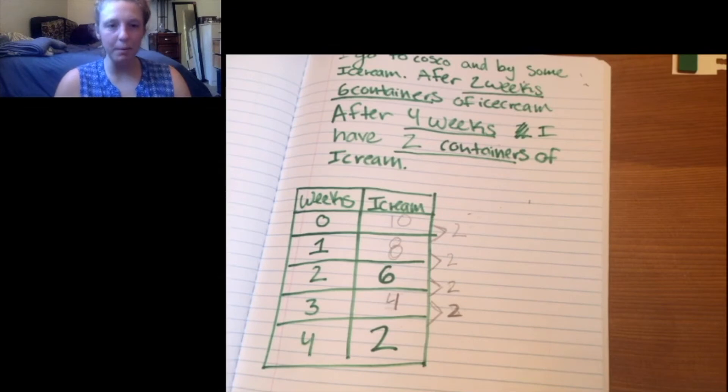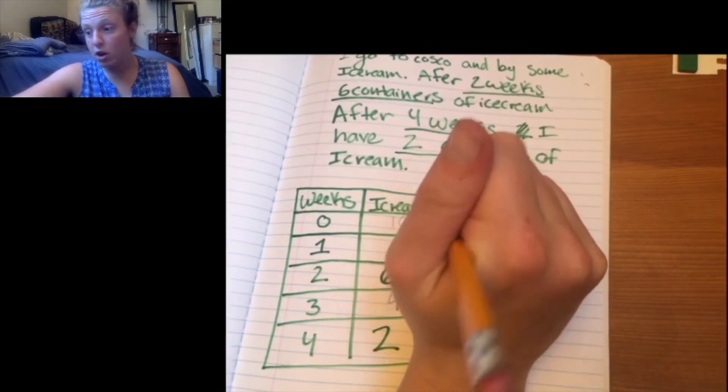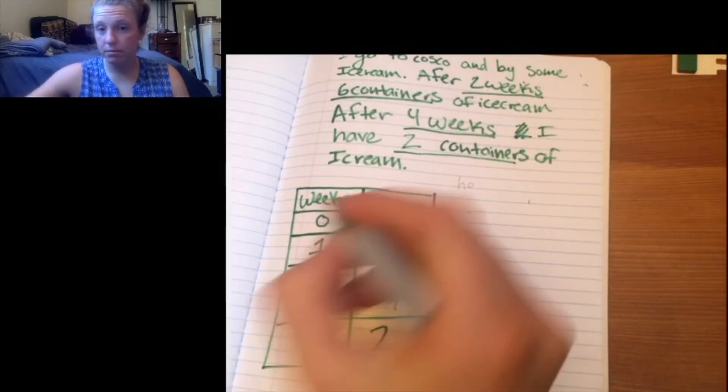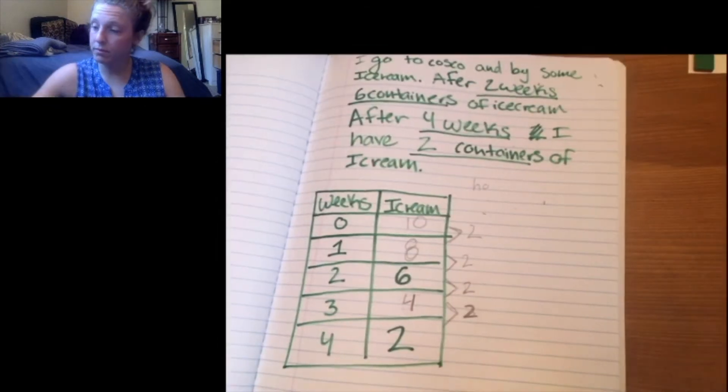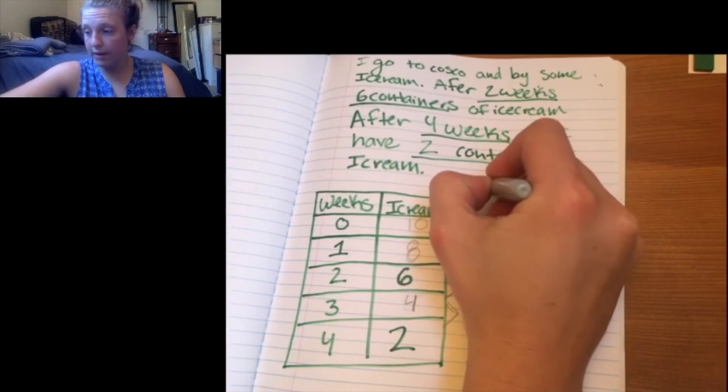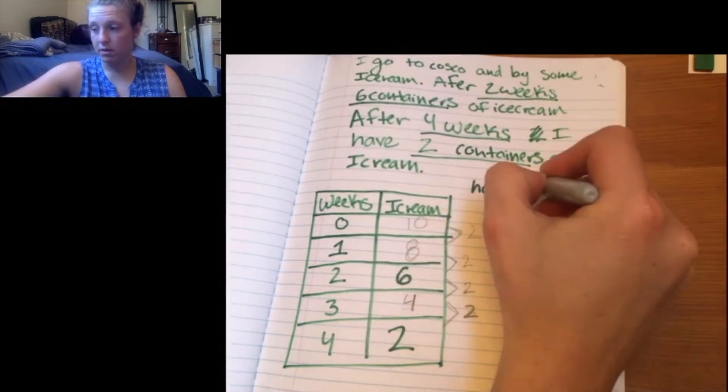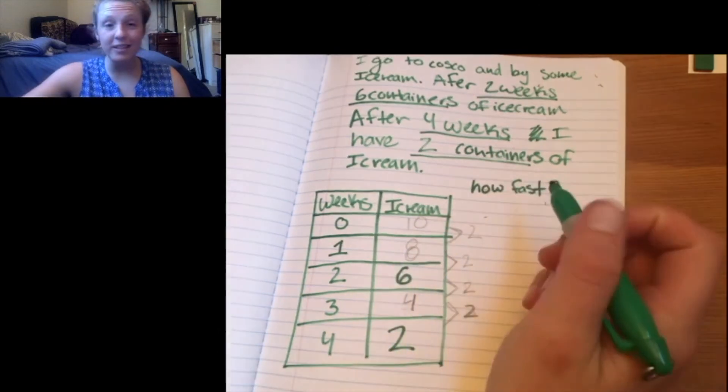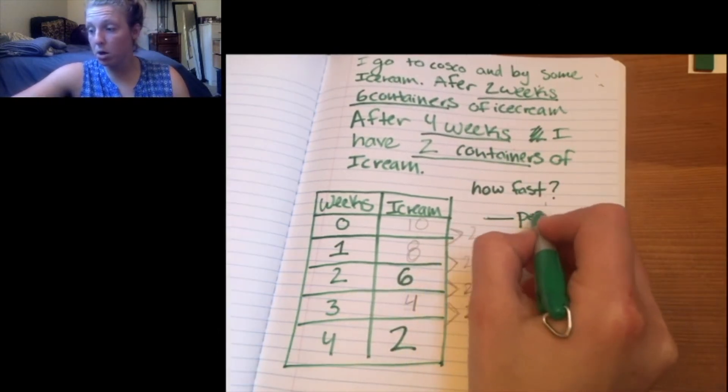So you're going to be given a bunch of different scenarios that kind of follow the same trend. We start with a bunch of stuff, we're slowly losing things. And you need to figure out where we start and when we run out. And so the first part of that process is to figure out the rate. So the question is how fast am I eating ice cream? So the first question that I'm asking on your homework is how fast? And this one is how fast am I eating ice cream? But some of them is like how fast am I driving? How fast am I biking? How fast are people drinking soda?